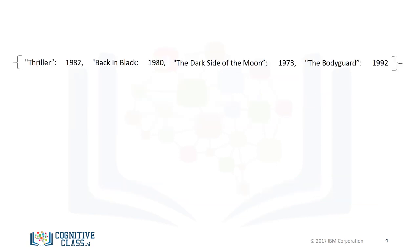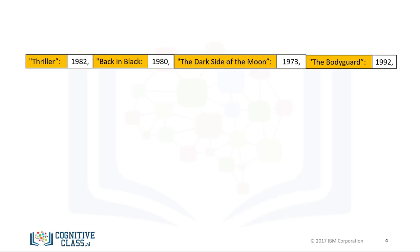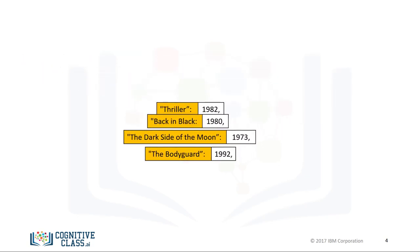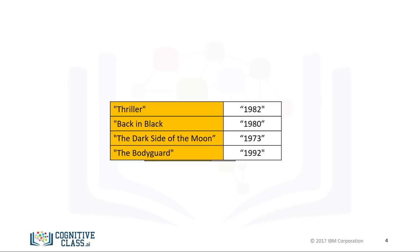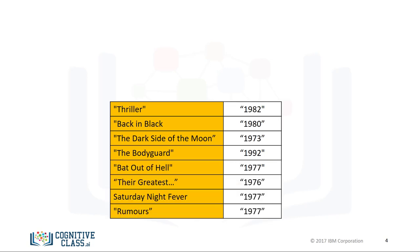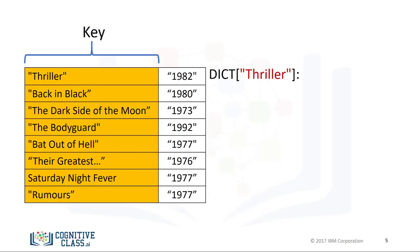Consider the following example of a dictionary. The album title is the key and the value is the release date. We can use yellow to highlight the keys and leave the values in white. It is helpful to use a table to visualize a dictionary, where the first column represents the keys and the second column represents the values. We can add a few more examples to the dictionary, and we can also assign the dictionary to a variable.